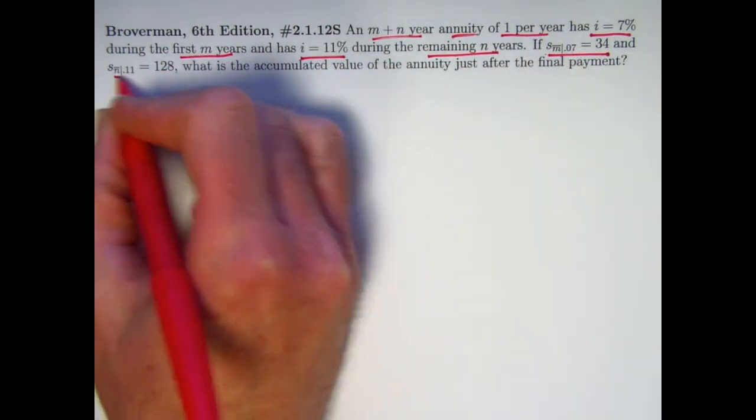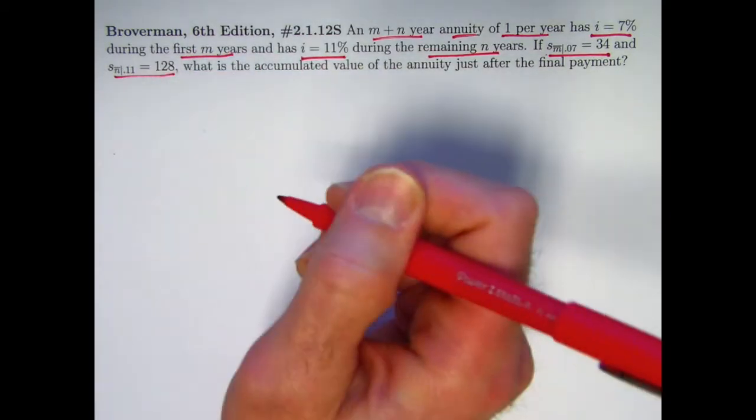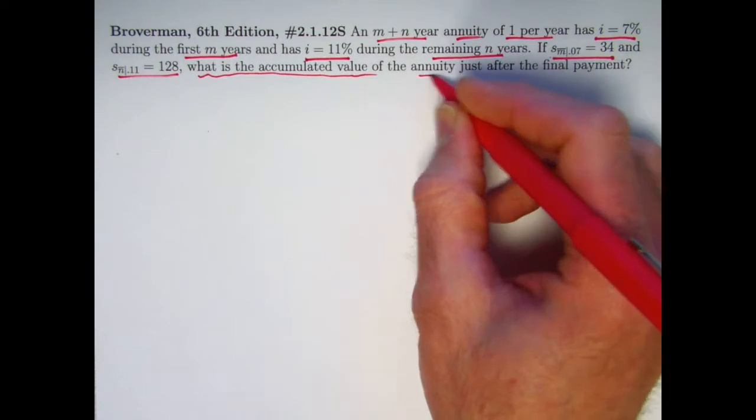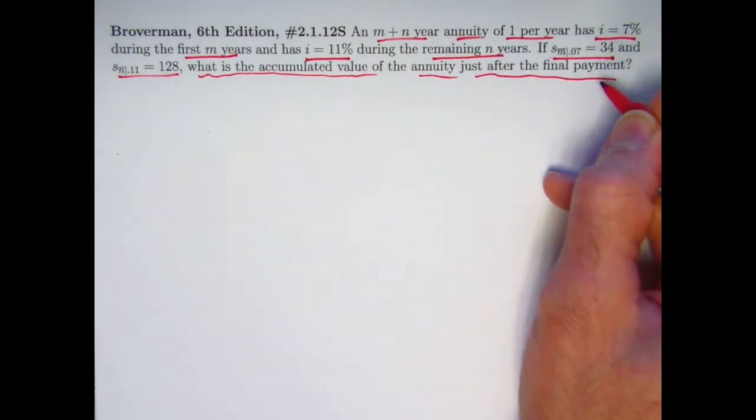S_N being 34 when you use the 7% interest rate, and S_N being 128 when you use the 11% interest rate. The goal is to find the accumulated value of the annuity just after the final payment.